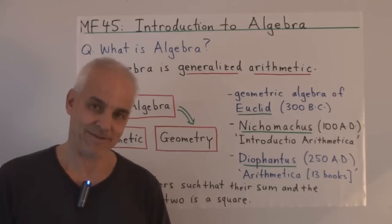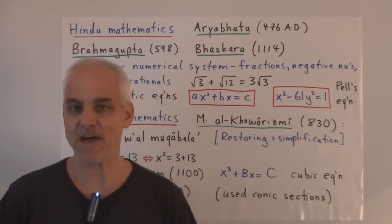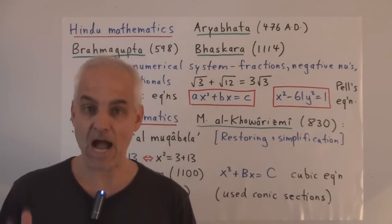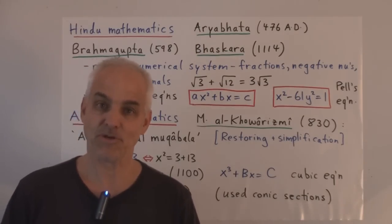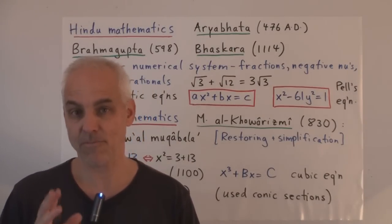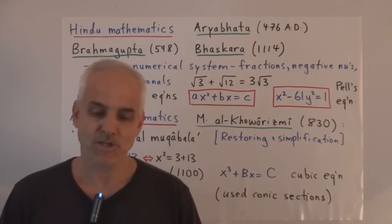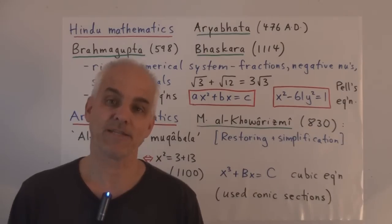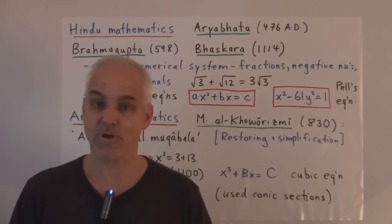But algebra as a separate discipline from arithmetic really only gets going with the Hindus and then later the Arabs. So let's have a look at that development. Earlier in this series, we've already marked that Hindu mathematics was notable for their introduction of essentially our numerical system. The decimal number system that we use to represent numbers is basically a gift to us from the Hindu mathematicians, and a crucially important one. So given their very strong foundation arithmetically, it's no surprise that they were able to solve a lot of reasonably sophisticated algebraic problems.